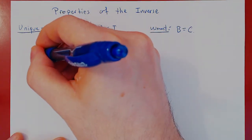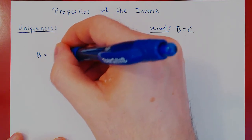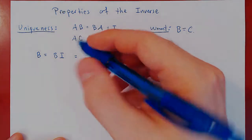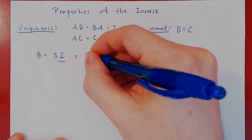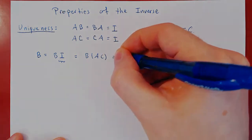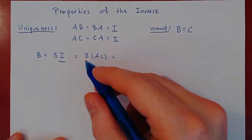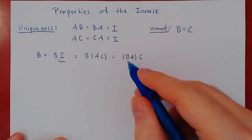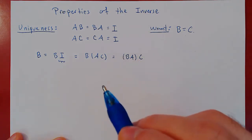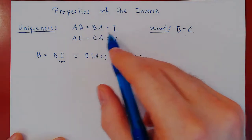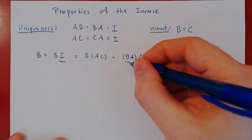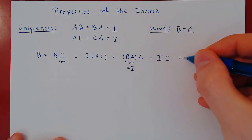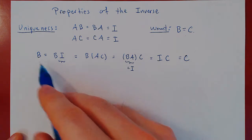Let's start with B. We can write B as B times I. Now make a substitution: I equals AC, so replace I by AC, giving B times AC. By associativity, this is (BA) times C. But B is the inverse of A, so B times A equals I. We get I times C, which is simply C. This proves that B must equal C.